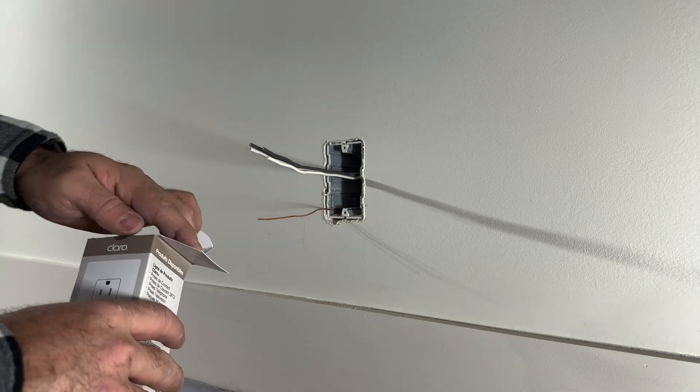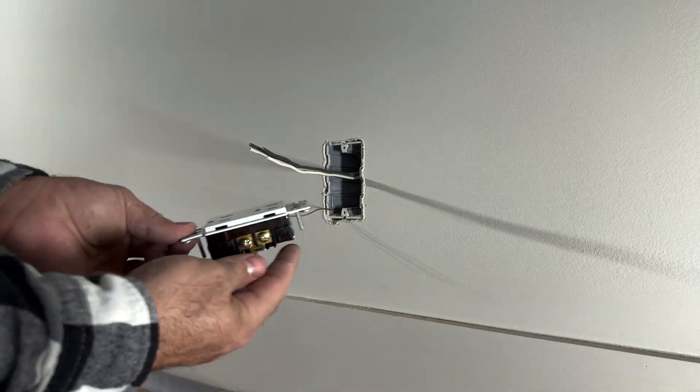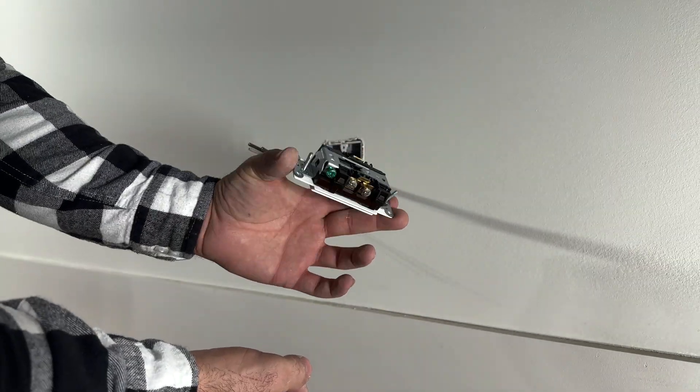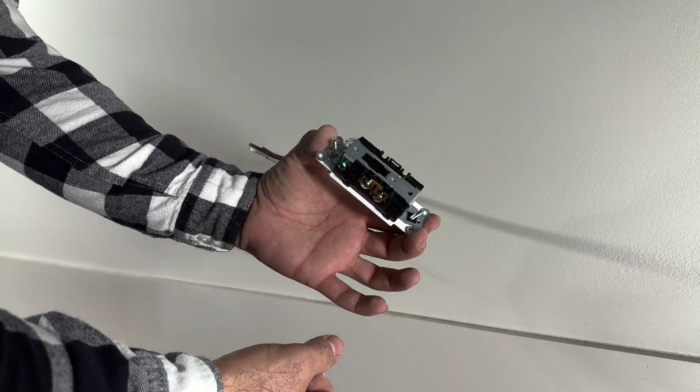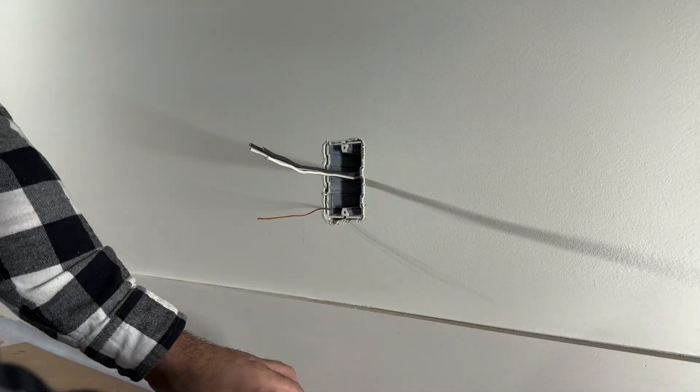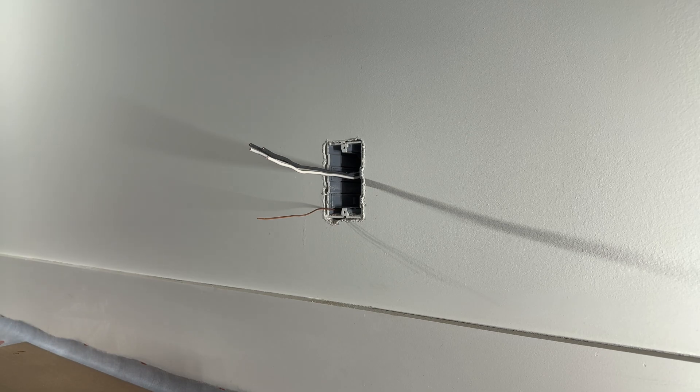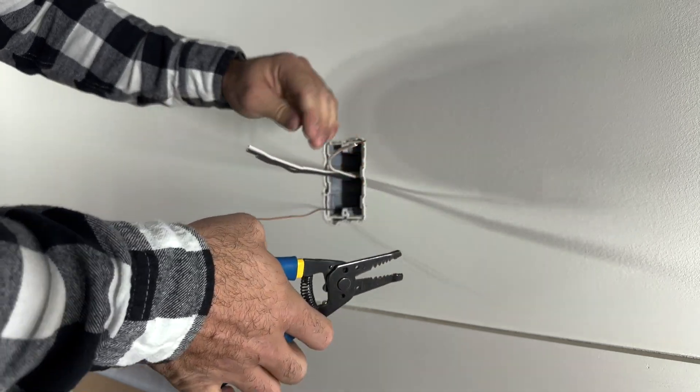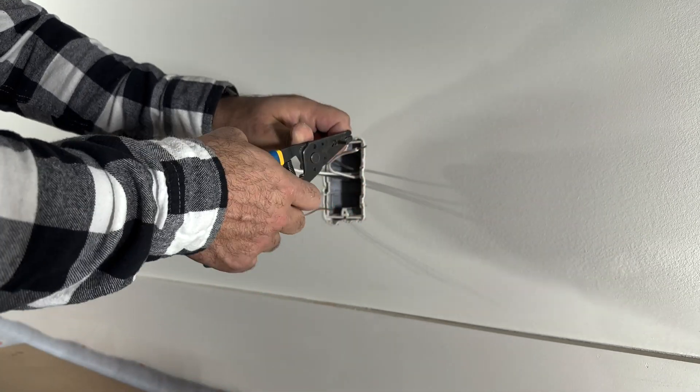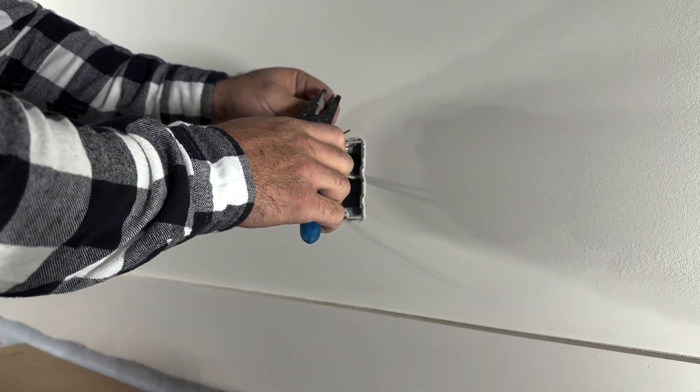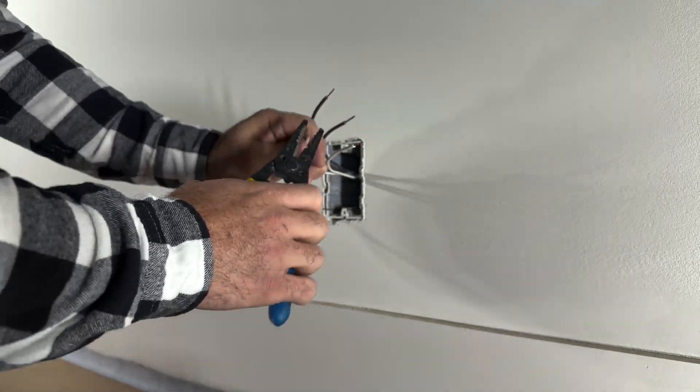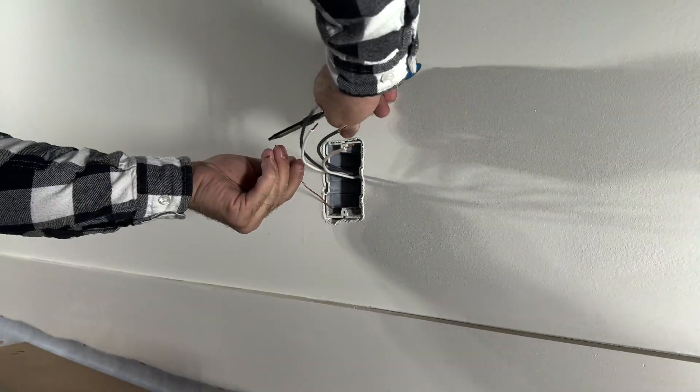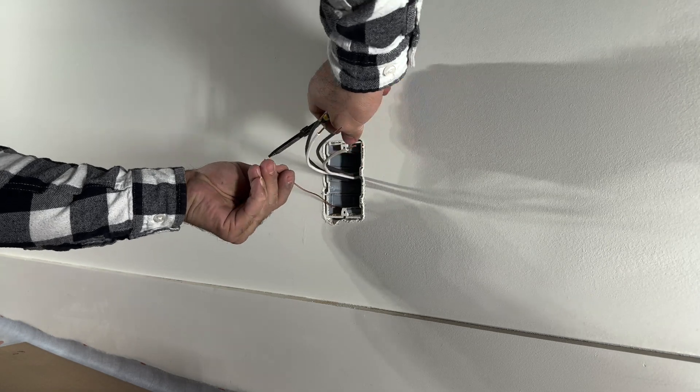We will follow by unboxing the receptacle. Here we are. This receptacle is quite nice to use because it has terminals where you can put your conductors in. Now we can strip our conductors. I usually do about three-eighths to half an inch. And we will do a small loop on the ground wire.